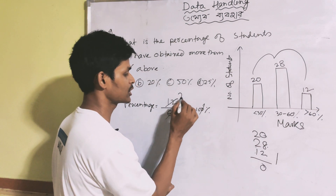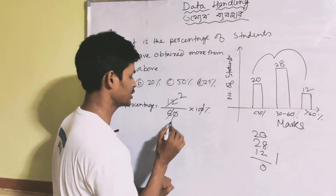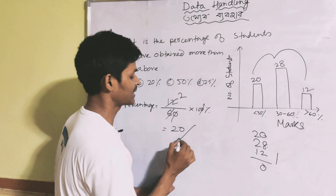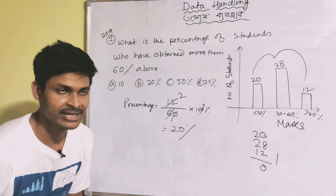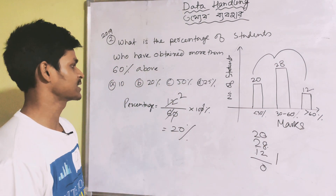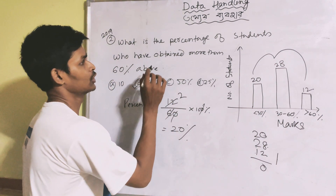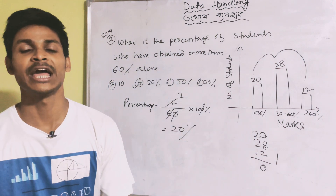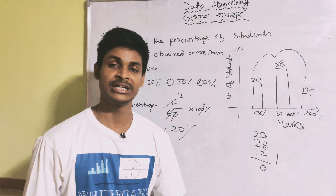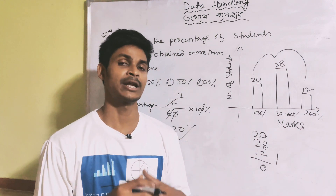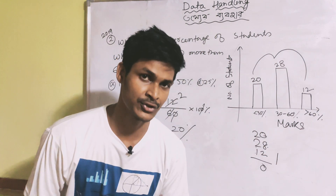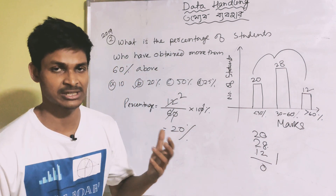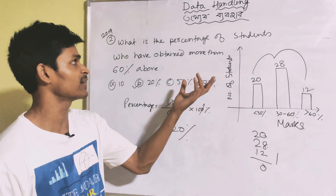So: 6 divided — 2's are 12, 10 into 2 equals 20 percent. The answer is 20 percent students scored 60 percent or above marks. Total students: 20 percent students scored 60 percent or above.